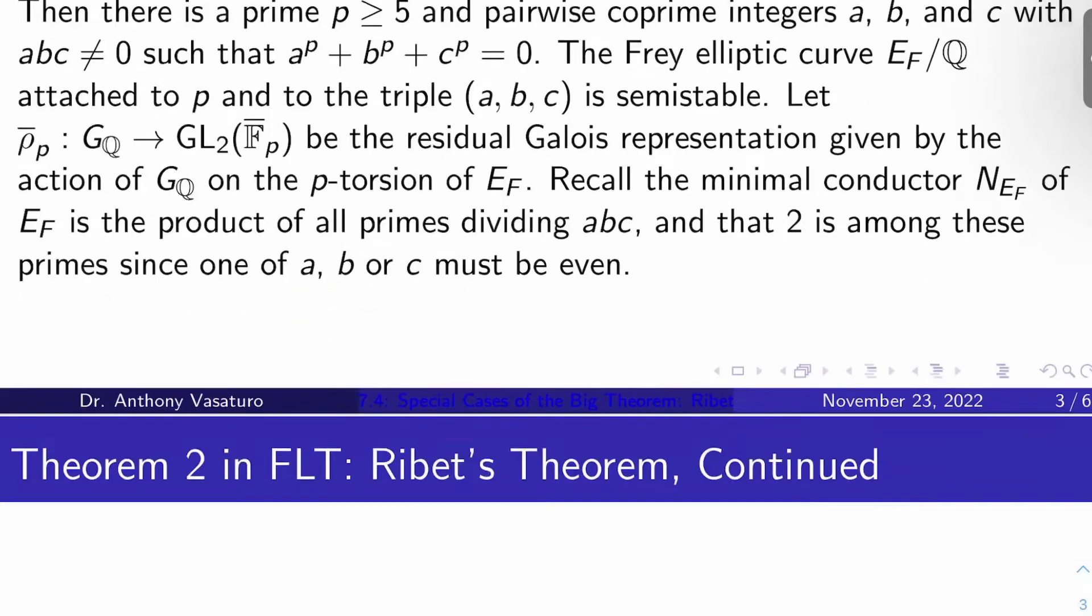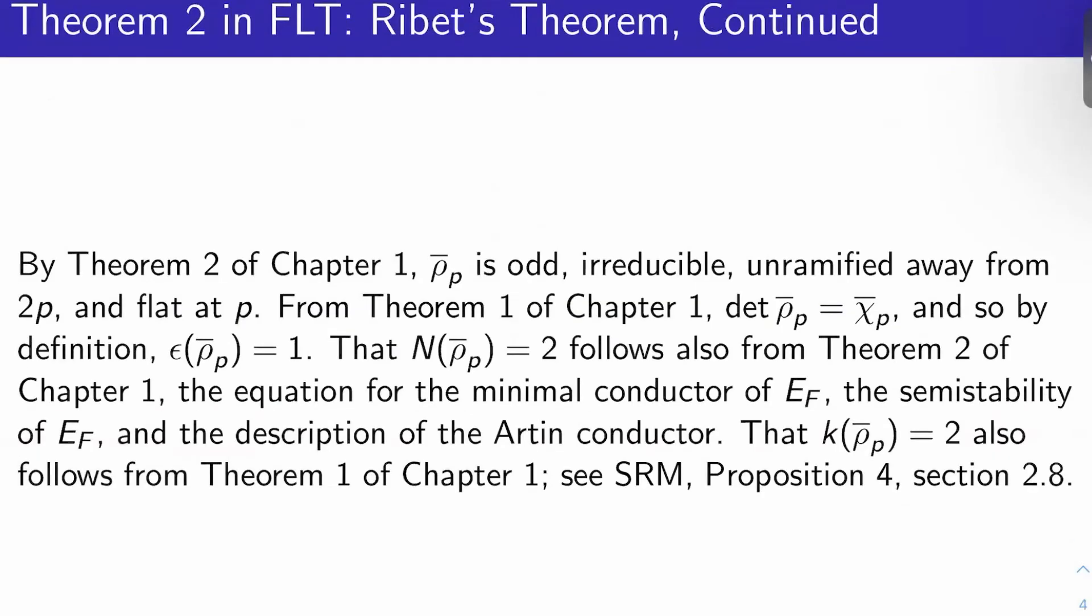By theorem two of chapter one, ρ̄_p is odd, irreducible, unramified away from 2p and flat at p. By theorem one of chapter one, ρ̄_p has cyclotomic determinant, so by definition ε(ρ̄_p) is trivial—the character attached to this representation is trivial according to the prescription of Serre's conjecture.